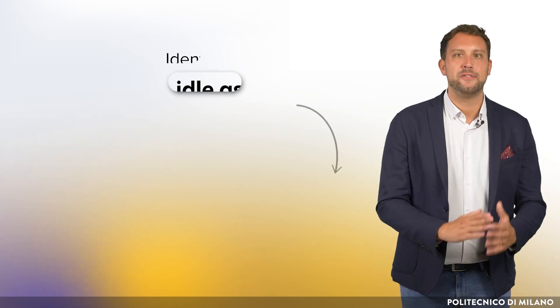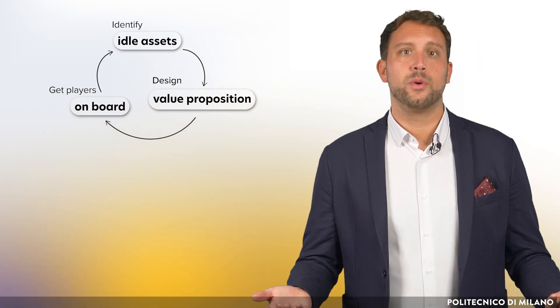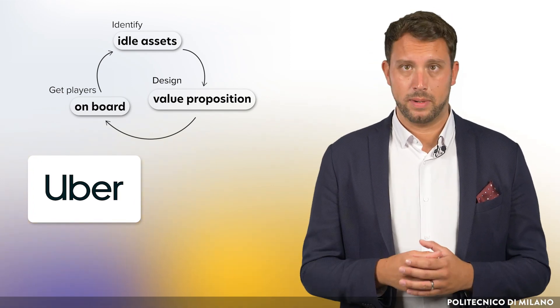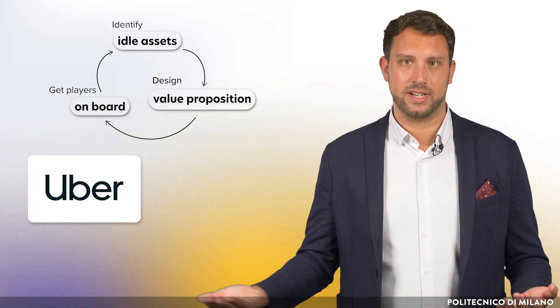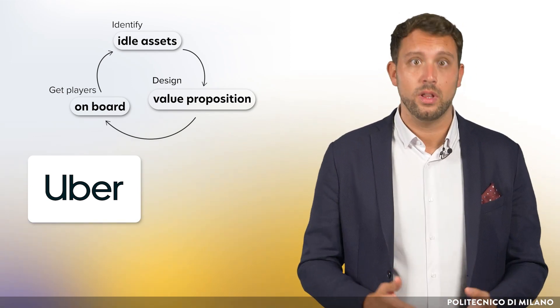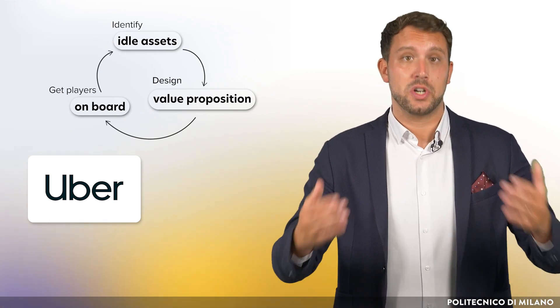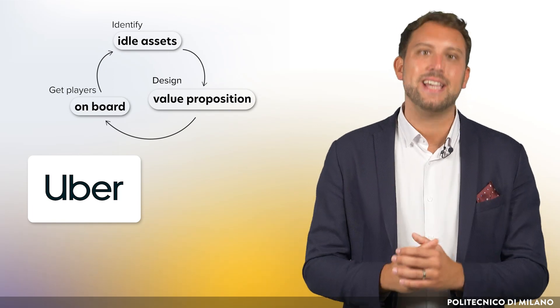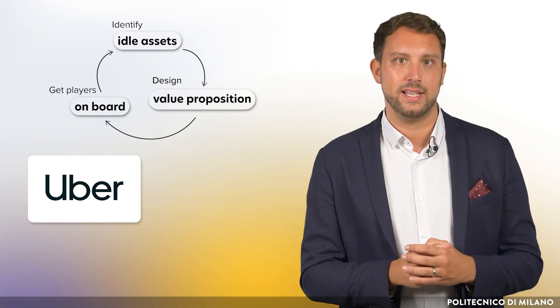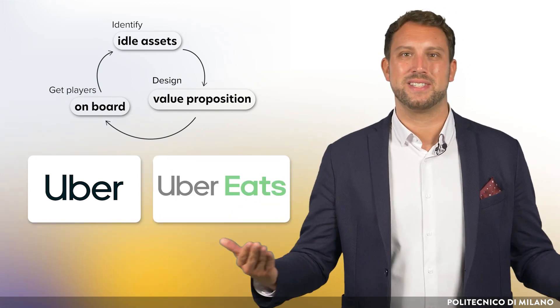The first step is related to the basic mechanism of platforms: the ability to identify and exploit idle assets. Companies like Uber have identified idle assets in the marketplace — idle cars and driver time — and have built a system that can make these assets more profitable for their owners and for the platform. Then they saw in their customer base, and again in drivers waiting for rides, another idle asset to exploit: delivering food. And Uber Eats was born.